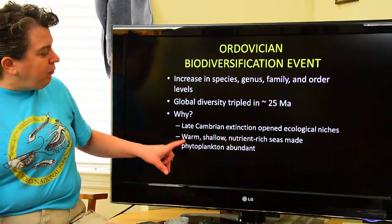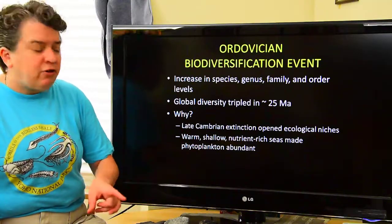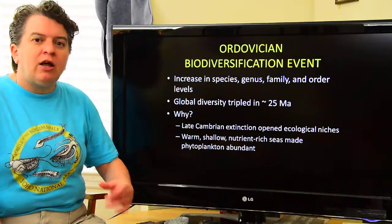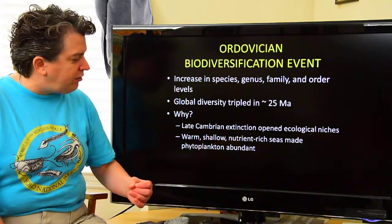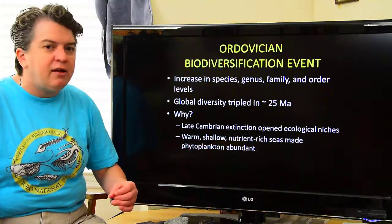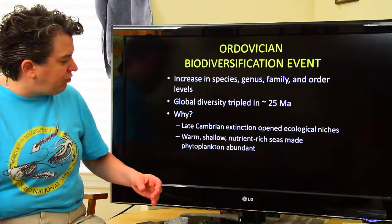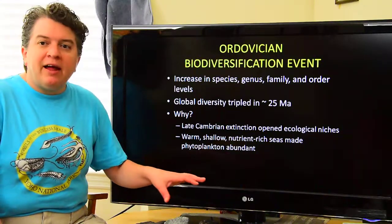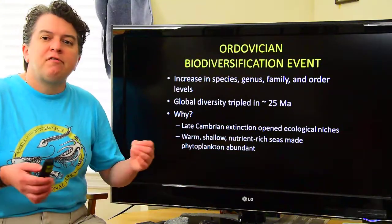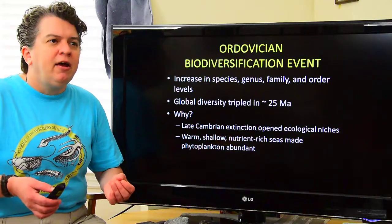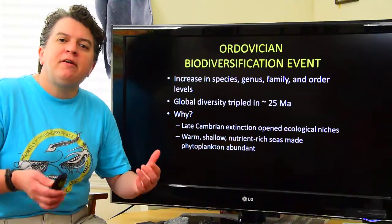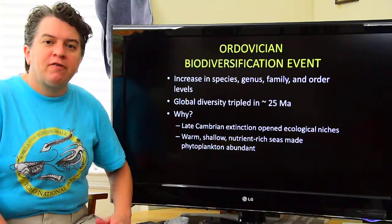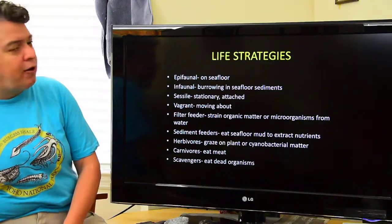In the Ordovician, we had these warm, shallow, epicontinental seas that were very nutrient-rich and phytoplankton was abundant. So it just might have been kind of the perfect environment for this diversification to occur.